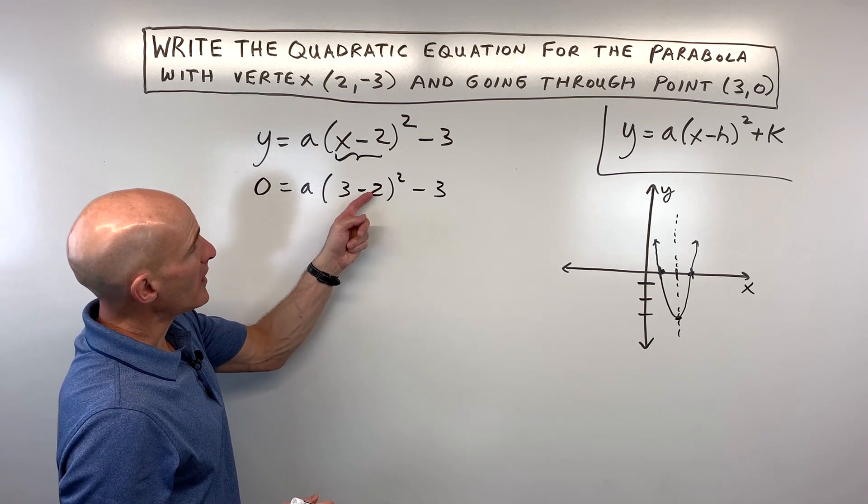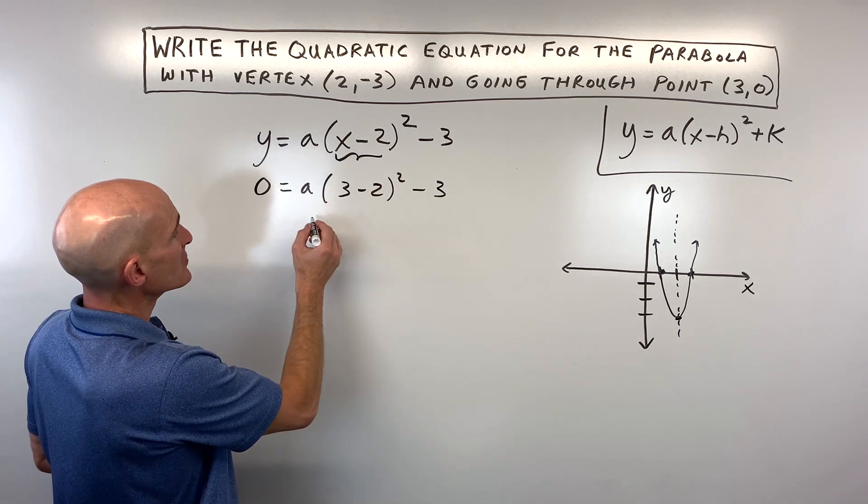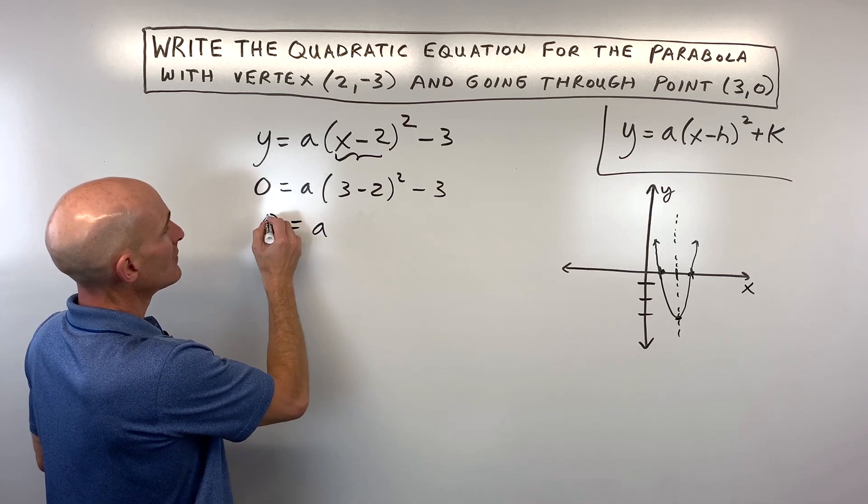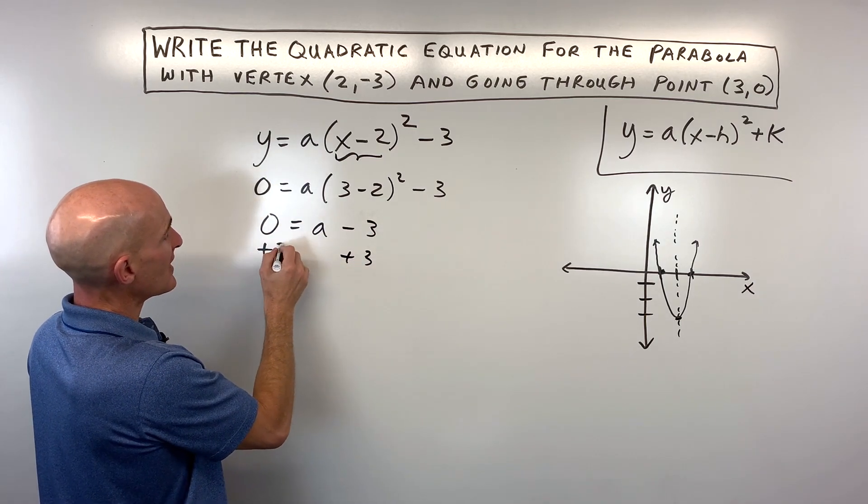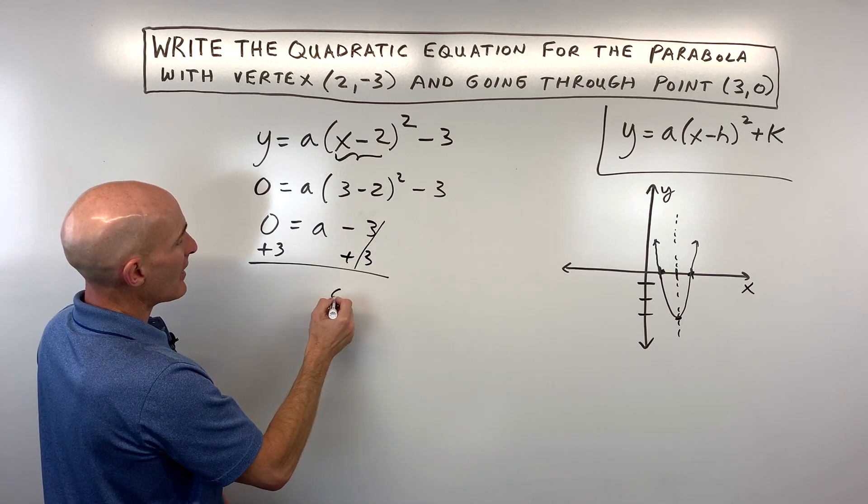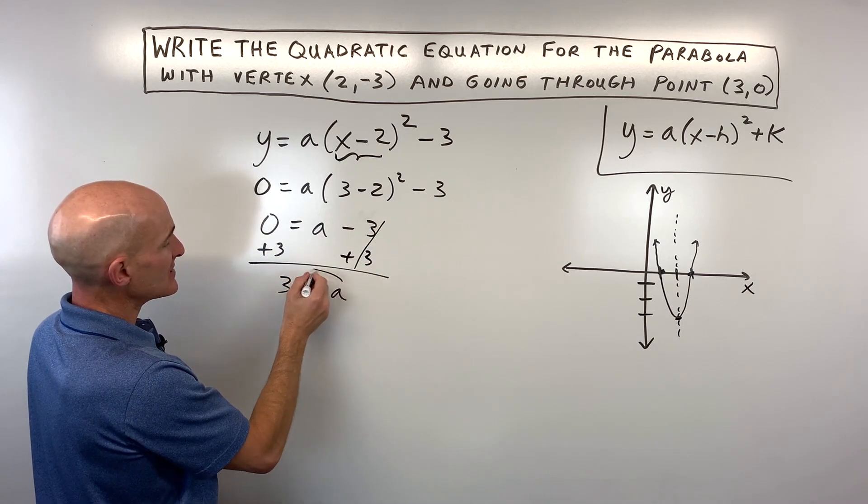3 minus 2 is 1, 1 squared is 1, so this comes out to a minus 3. And all we have to do is add 3 to both sides of the equation to get a by itself. And a is equal to 3.